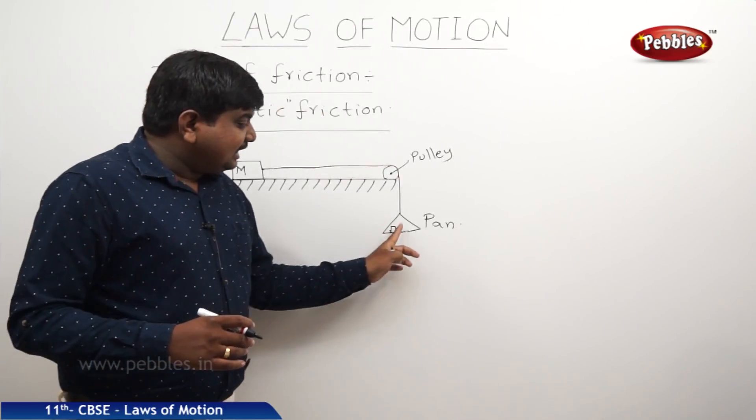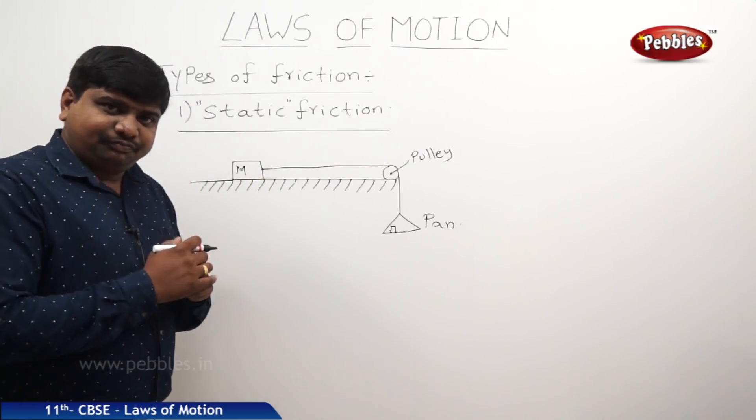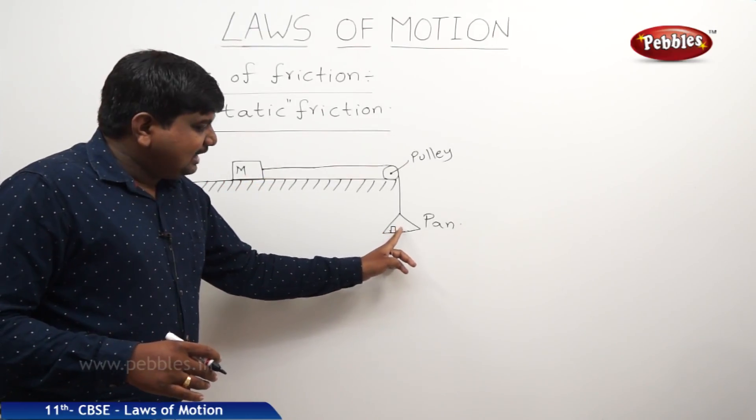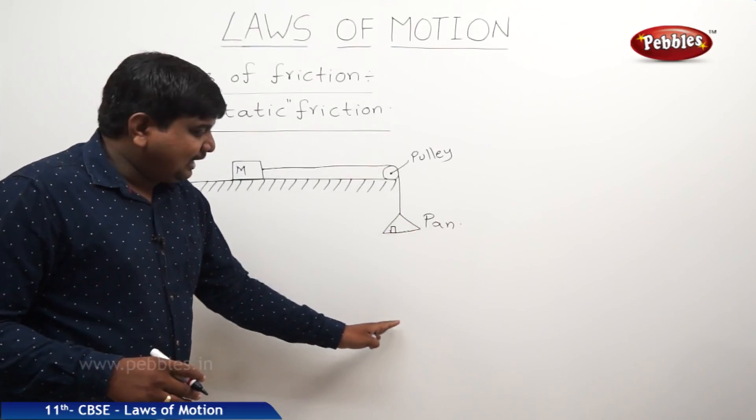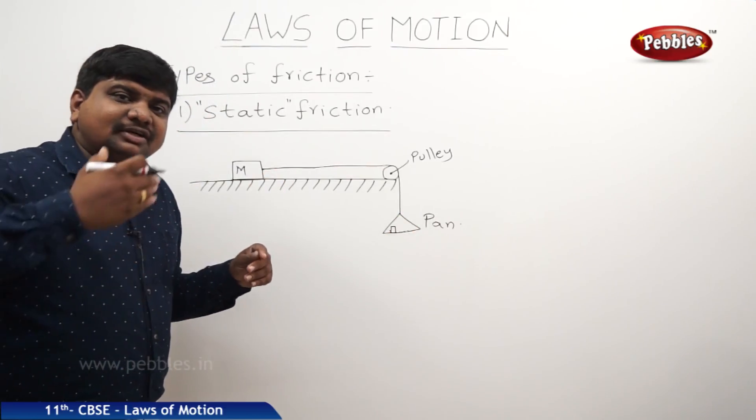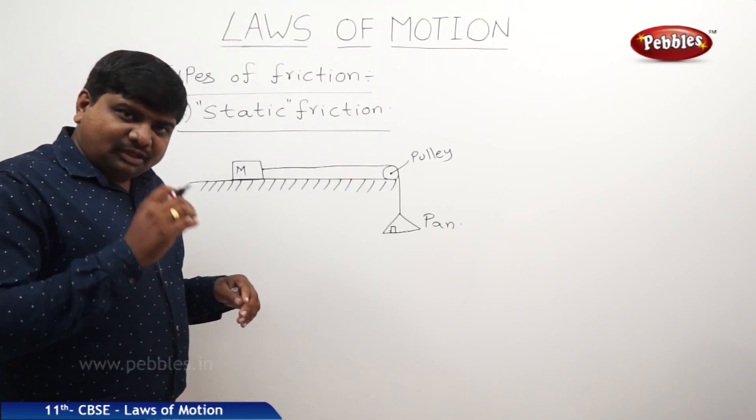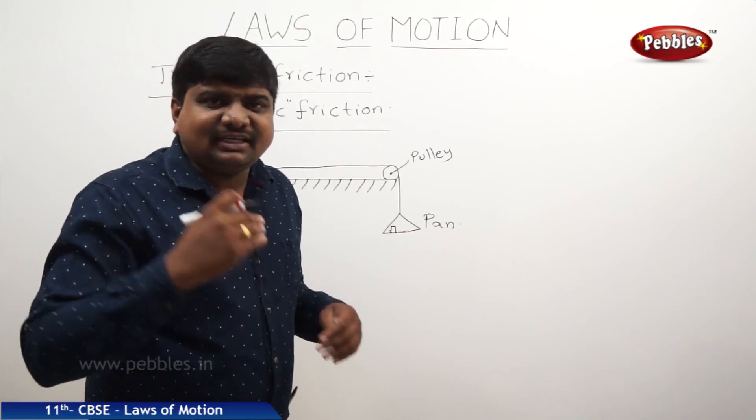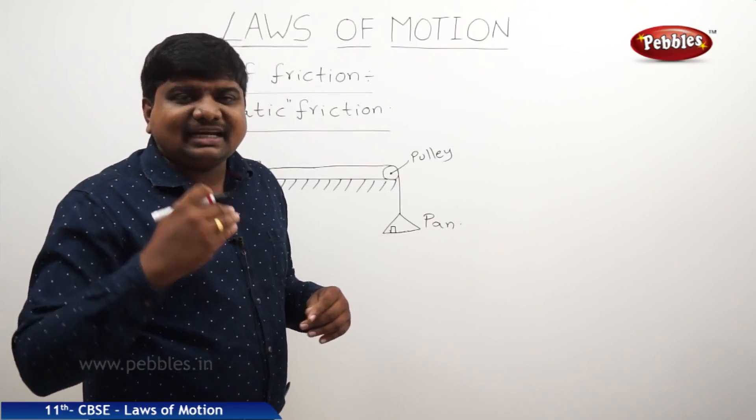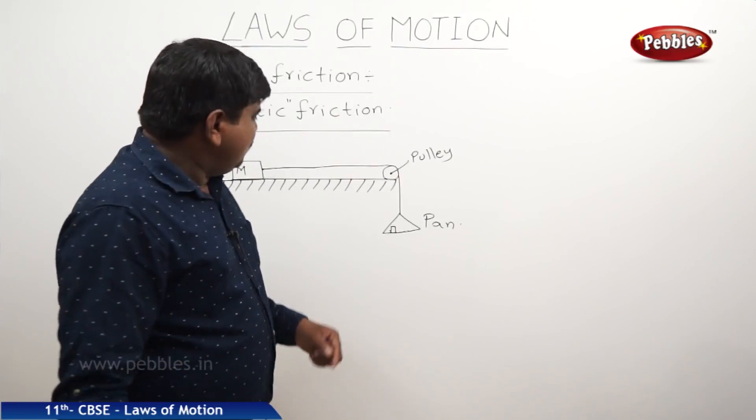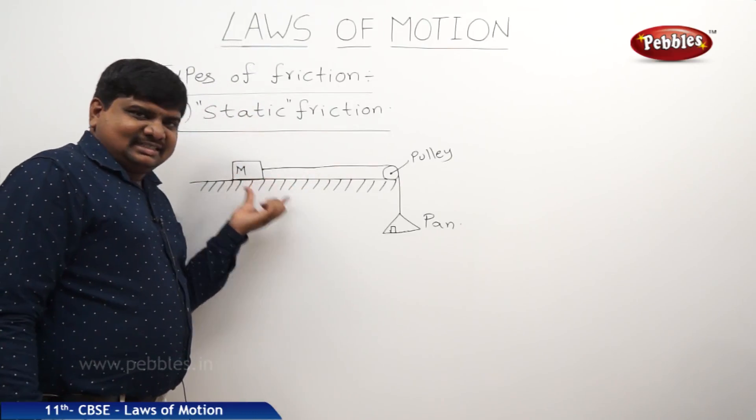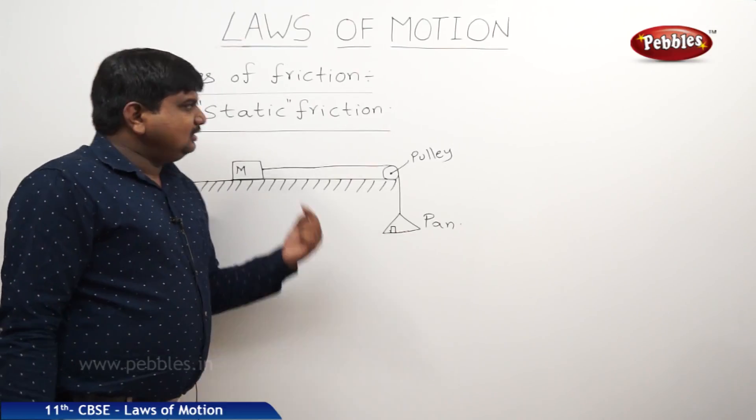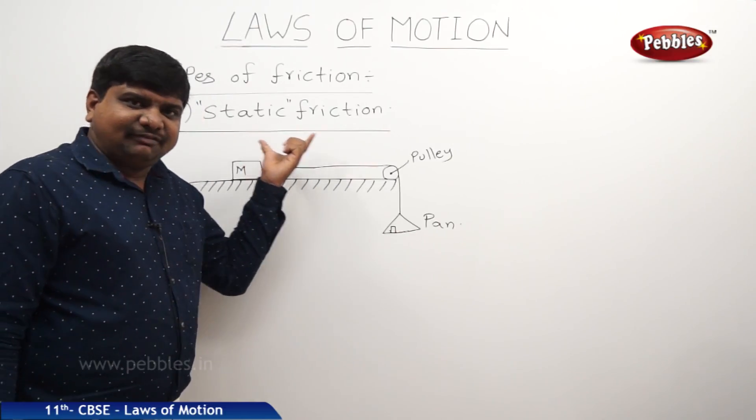In the previous case net force acting on the body is zero. In the second case while we are keep on adding the weights in the pan, the force is not sufficient to move. The meaning is that this body is experiencing a different type of friction or a force of reaction or frictional force which keeps it in the steady state. Of course a force is acting on it in either end. This type of friction is called static friction.